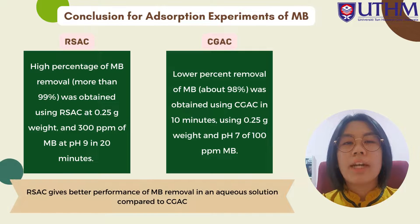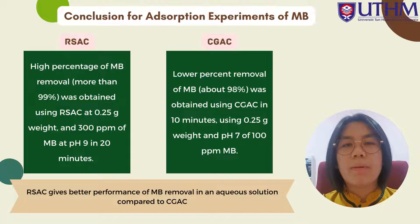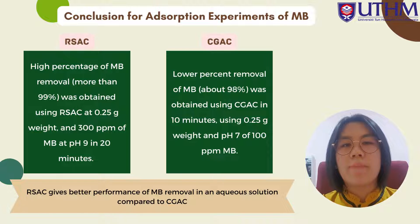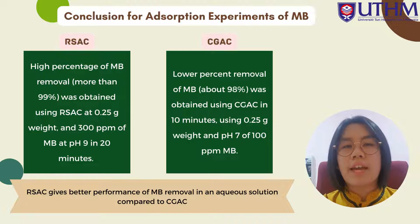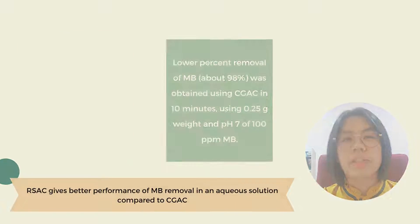In conclusion, more than 99% of Methylene Blue removal was obtained using rice straw activated carbon at 0.25 g weight and 300 ppm of Methylene Blue at pH 9 in 20 minutes. Meanwhile, about 98% of Methylene Blue removal was obtained using Citronella grass activated carbon in 10 minutes using 0.25 g weight and pH 7 with 100 ppm Methylene Blue. This data shows that rice straw activated carbon gives better performance of Methylene Blue removal in aqueous solution compared to Citronella grass activated carbon.